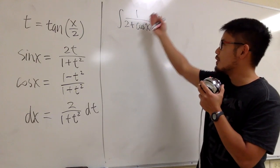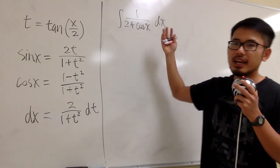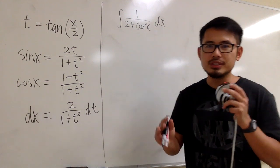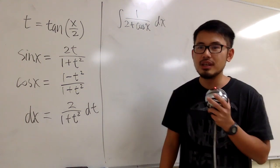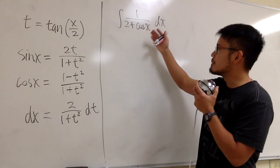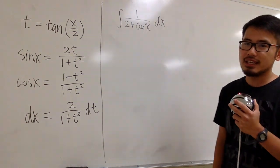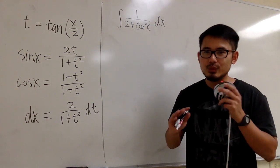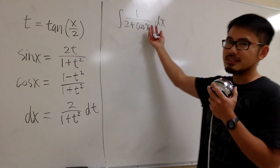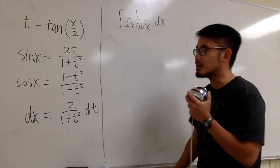So now let's see how to integrate 1 over 2 plus cosine x, and this is something that we definitely should use the Weierstrass substitution. If you want to multiply the top and bottom by 2 minus cosine x, it unfortunately won't work. Anyways, this is how it goes with all these ingredients right here.